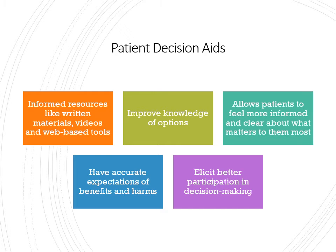Have accurate expectations of benefits and harms. If you do non-surgical therapy on a patient with severe bone loss, they might have sensitivity, their teeth might become more mobile — there are negative things that can happen in the process of getting healthier, and you need to let them know. Decision aids help elicit better participation in the decision-making. A lot of times patients sit there saying 'uh-huh, okay' and sign without truly understanding. If you don't make it a conversation or give them ways to follow up, they're not going to ask questions, and they'll leave unhappy.